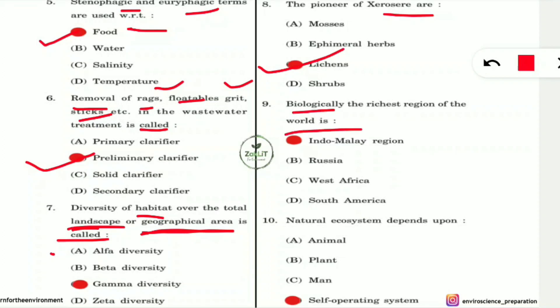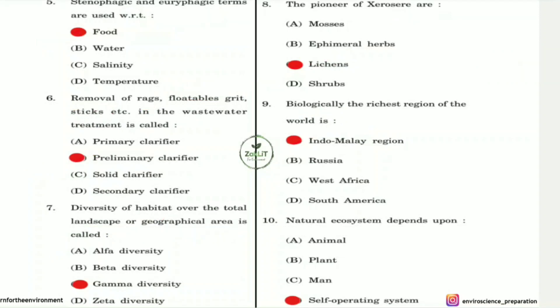Question 9: The biologically richest region of the world is what? It is the Indomalaya region, option A, which is rich in both flora and fauna and is also one of the best regions for endemic species.